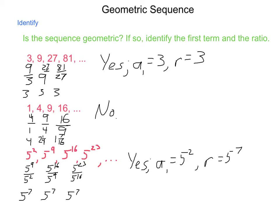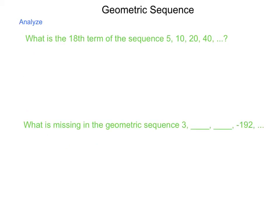As you're able to identify these geometric sequences and work your way through, next, we need to be able to find missing items and write both the recursive and explicit form sequence. First, what is the eighteenth term of the sequence 5, 10, 20, 40?